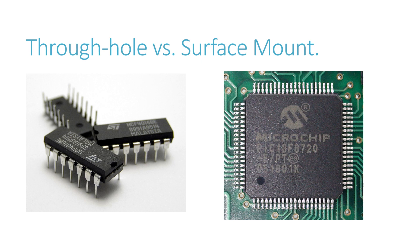In general, IC packages can be classified into two categories: through-hole and surface mount. If the packages have pins that can be inserted into the holes of a PCB or PWB, they are called through-hole packages. If the packages are not inserted into the PWB but are mounted on the surface of the PWB, they are called surface mount packages. The advantage of surface mount packages is that both sides of the PWB can be used, and therefore higher packing density can be achieved on the board.